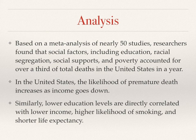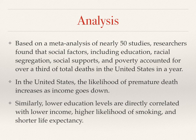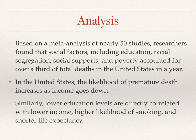Based on a meta-analysis of nearly 50 studies — essentially a study of different studies that looks at themes across them — researchers found that social factors including education, racial segregation, social supports, and poverty accounted for over a third of total deaths in the United States in a year. These are areas where we could make significant sociological interventions. In the United States, the likelihood of premature death increases as income goes down. Low education levels are directly correlated with lower income, higher likelihood of smoking, and shorter life expectancy.